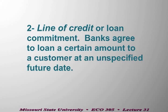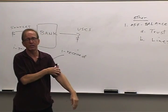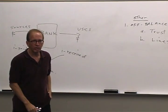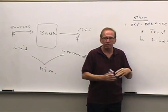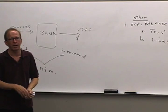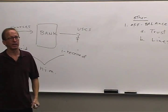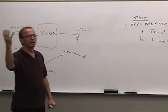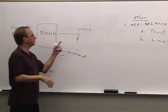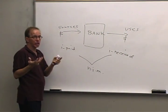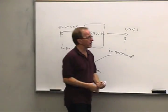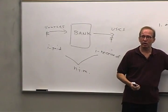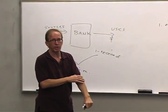Once the line of credit is established, all the customer has to do is write a check or make an electronic transfer. When that check is presented to the bank, the banker honors it and at that point the customer has drawn on their line of credit. You don't have to take it all at once — if you have a $100 million line of credit and take $5 million, you've drawn down five and still have 95 remaining.